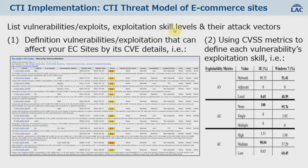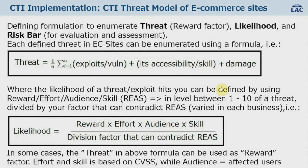To understand the enumeration of threats, we seek further details on vulnerabilities, exploitation skill levels, and attack factors — this information can be seen in CVE and CVSS scores for published vulnerabilities. Going to the calculations: we formulate the threat likelihood and risk bar. Each defined threat in e-commerce can be enumerated using a formula where the Threat Factor is the average of the exploit/vulnerability score plus accessibility or skill level, added to the damage. The likelihood of a threat hitting you is defined using reward, effort, audience, and skills.